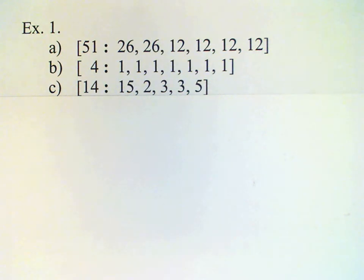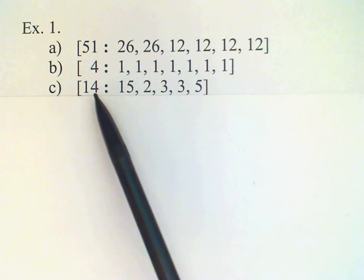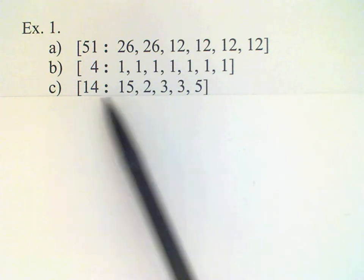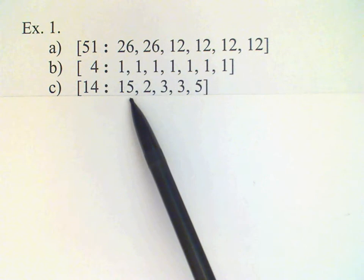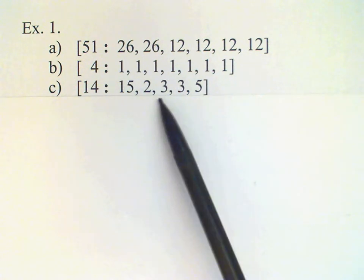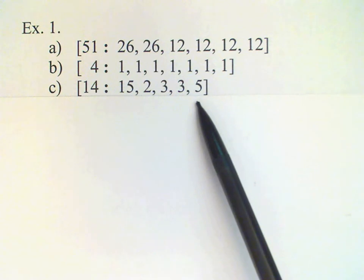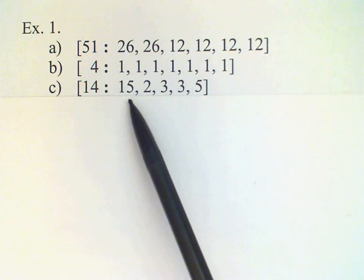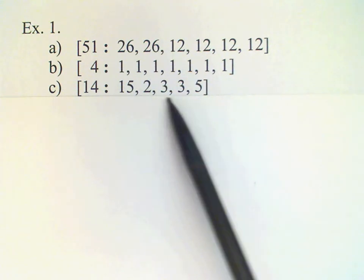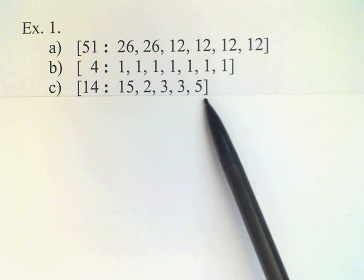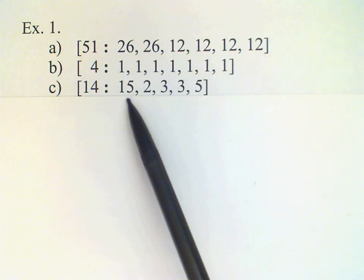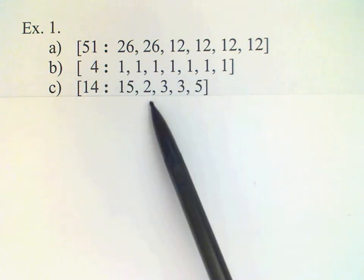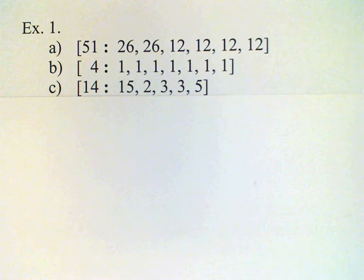In C [14: 15, 2, 3, 3, 5], we have a quota of 14 votes needed to pass a resolution. We see that if this voter likes something, then it will definitely pass. On the other hand, if all of these like something and this one does not like it, then it will not pass, because 2 plus 3 plus 3 plus 5 is not enough. That's only 13 votes, so the resolution cannot pass.